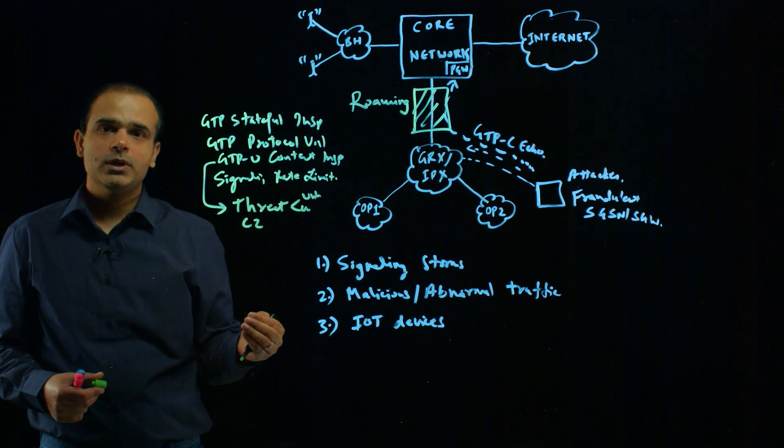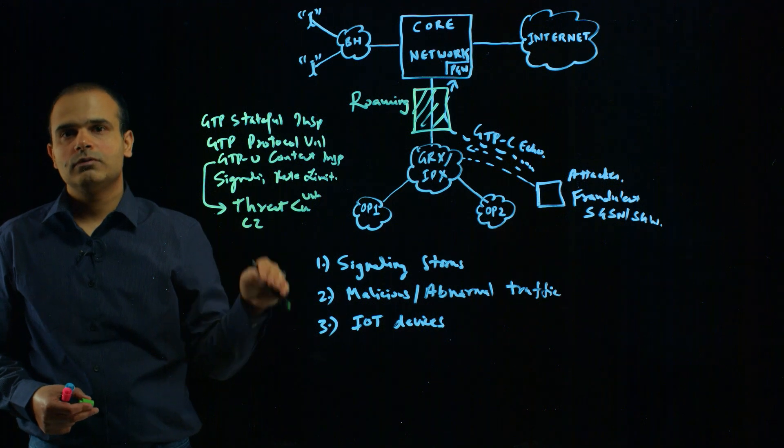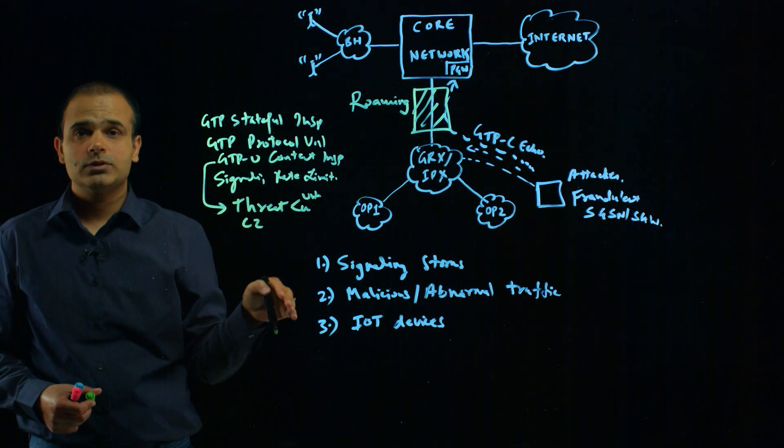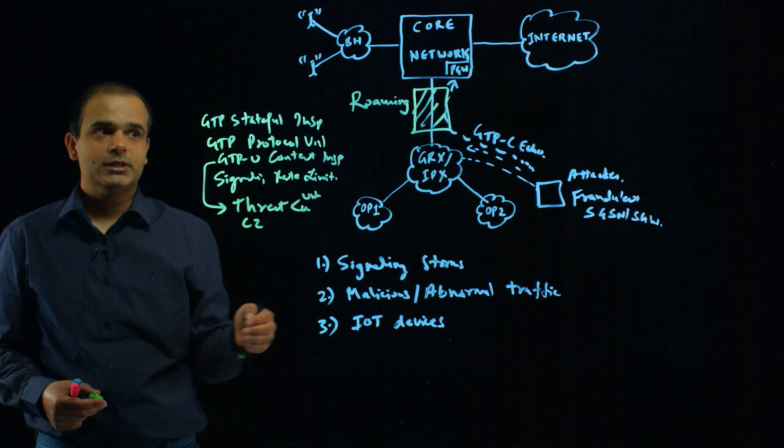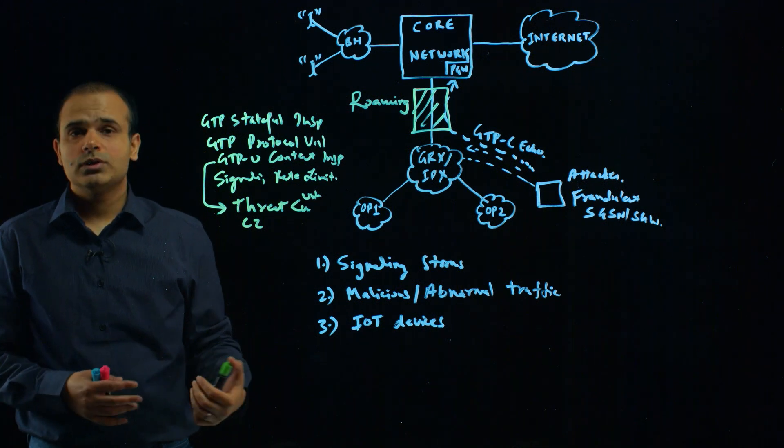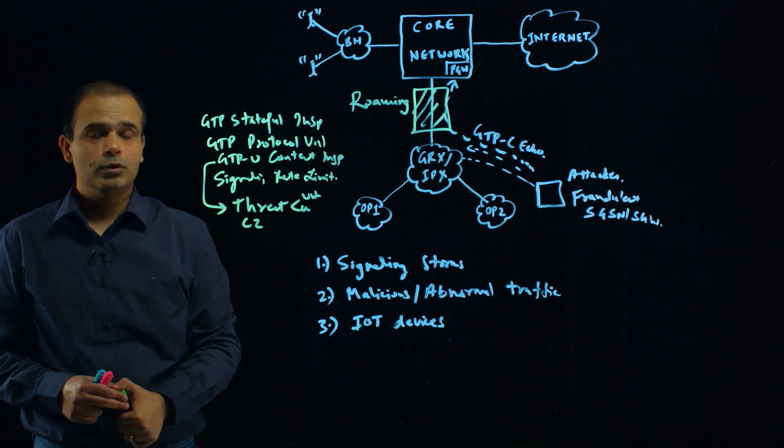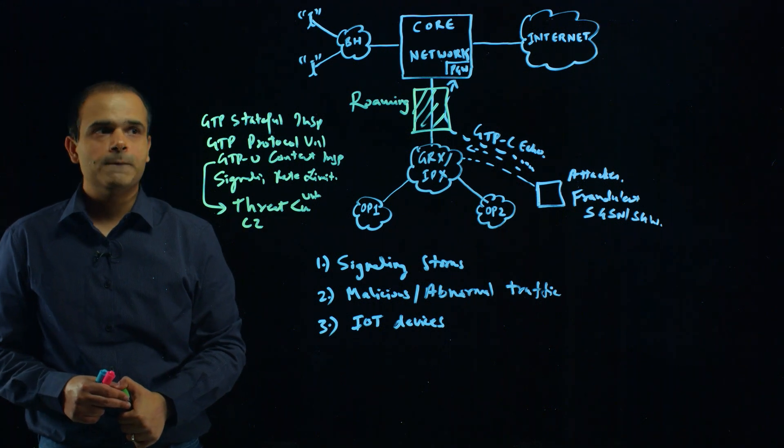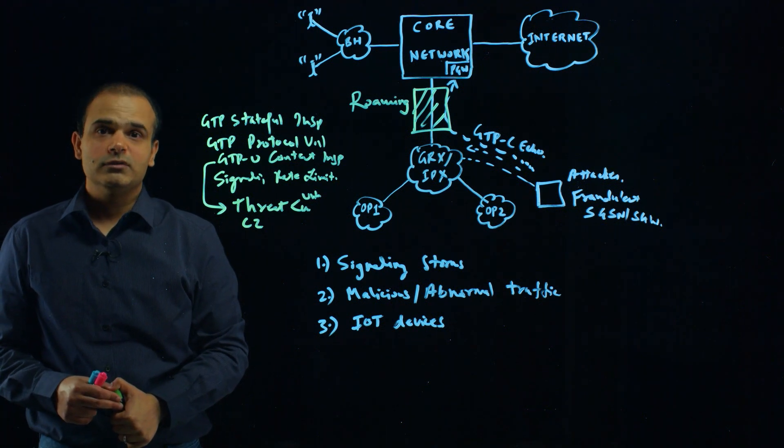As you can see, we not only protect your network from data layer attacks, we also protect your network from control layer attacks. With this evolution of networks where roaming has become really important, it's critical to protect the network from these types of attacks and maintain network availability.